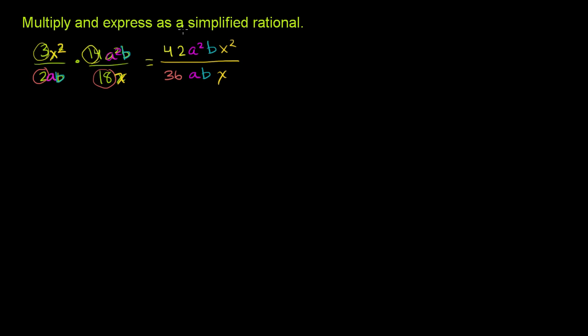So we've multiplied the two, and now we just need to simplify them. So let's just think about this a little bit. Both 42 and 36 are divisible by 6. That's their greatest common divisor. So let's divide both of them by 6. 42 divided by 6 is 7. 36 divided by 6 is 6.